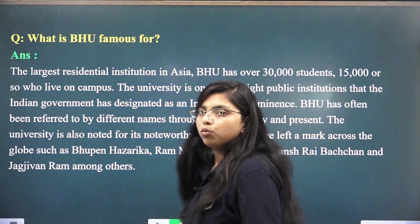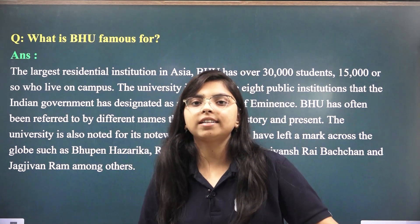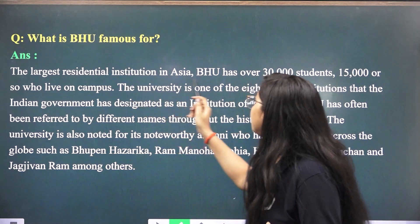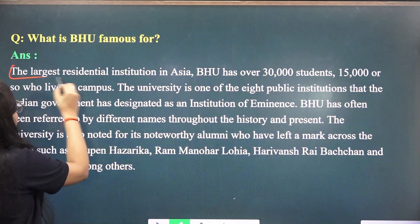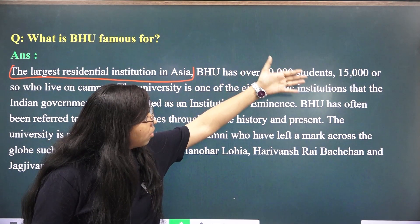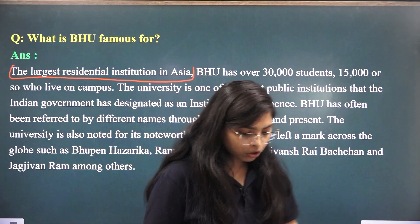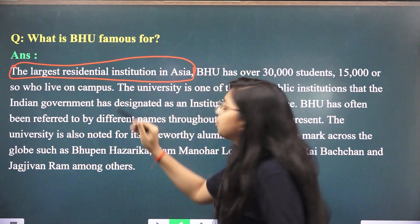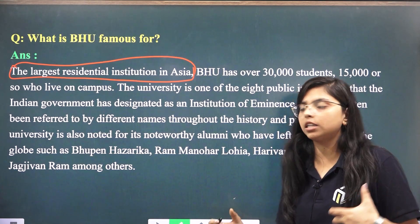There is a question about why BHU is famous. BHU is famous because it is the largest residential institution in Asia. BHU has over 30,000 students, of which 15,000 students live on campus. The hostel facility is also provided here. It is also a very old and reputed university.